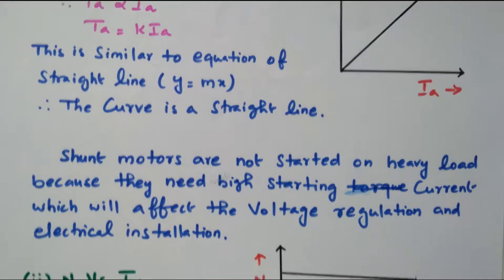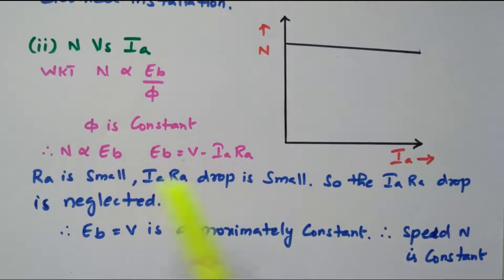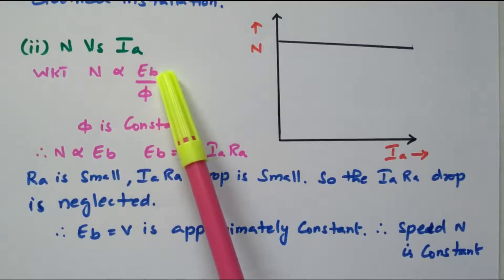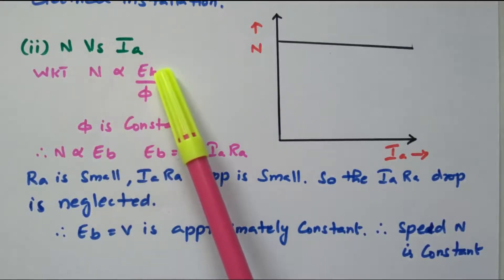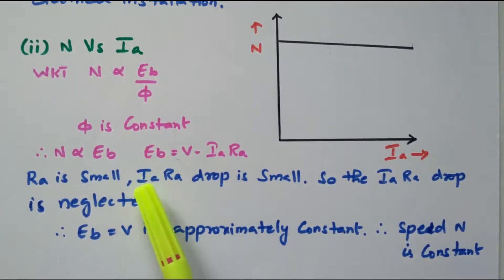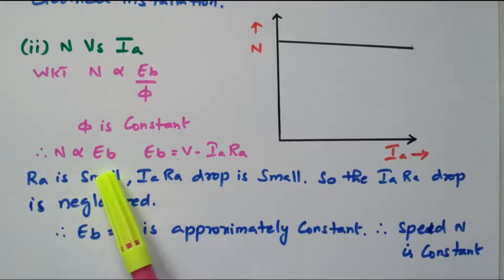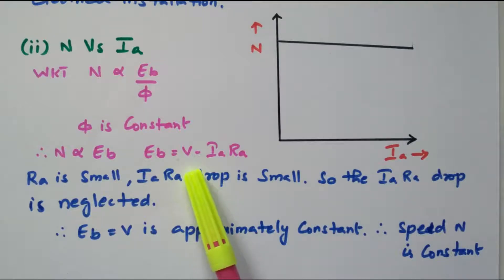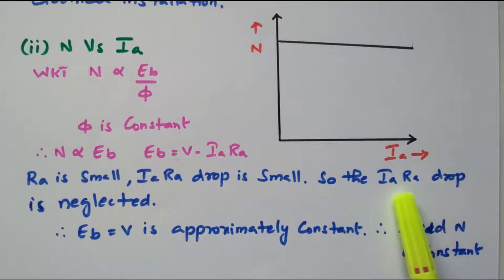Now we will go to the second characteristic: Speed versus armature current, N versus I_A. We know that N is directly proportional to E_B divided by φ. Speed is directly proportional to back EMF and inversely proportional to flux. But in a shunt motor, the flux is constant. So the speed is directly proportional to only back EMF. The back EMF is given by E_B = V − (I_A × R_A). Since R_A is very small, the I_A × R_A drop is also very small, so we can neglect the term I_A × R_A.